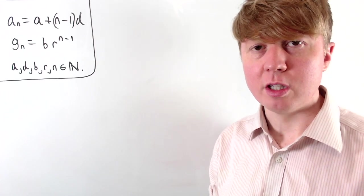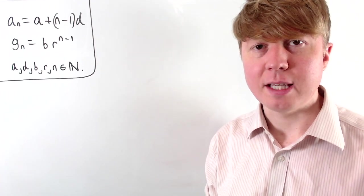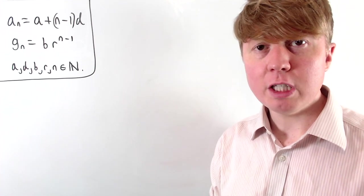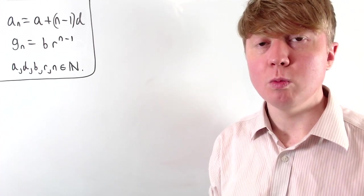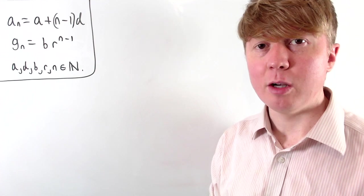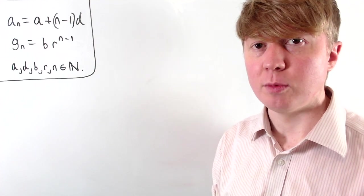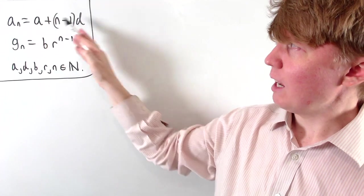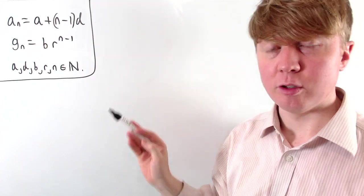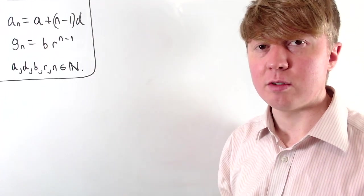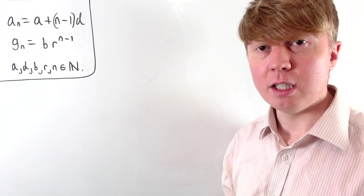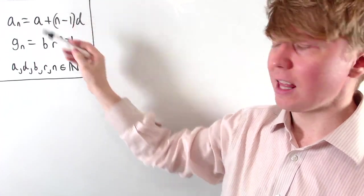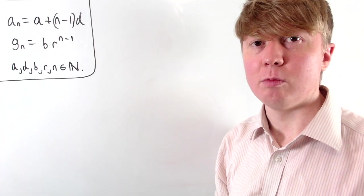We're going to look at certain subsequences of arithmetic and geometric sequences. To recap, an arithmetic sequence is one where you always add the same amount going from term to term. You start with some value a, then add the common difference d to get to the next term. To get up to the nth term, you'd add d n minus one times — this is where the nth term formula comes from.